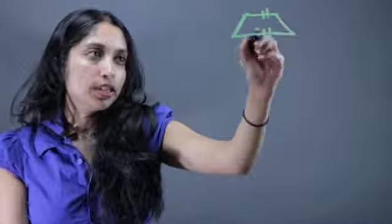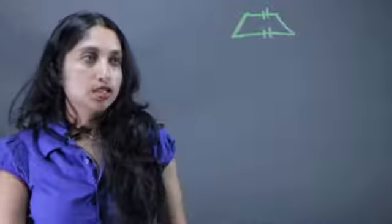So these two sides right here cannot be parallel, but these two sides have to be. So one pair of parallel sides gives us a trapezoid.